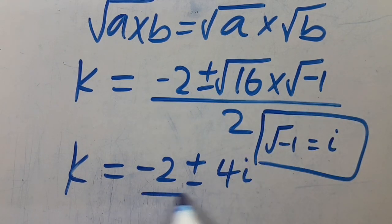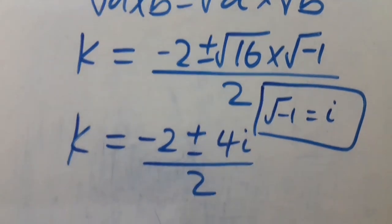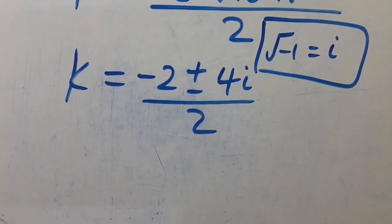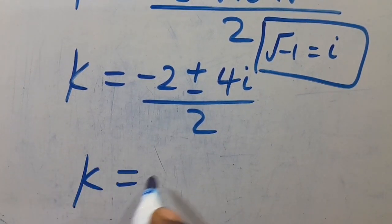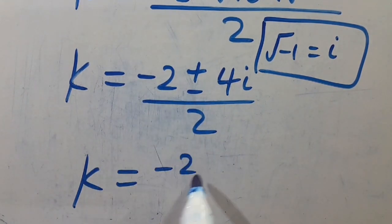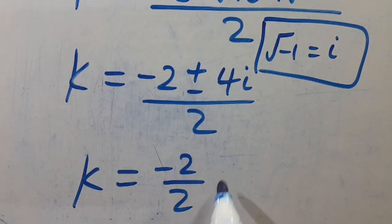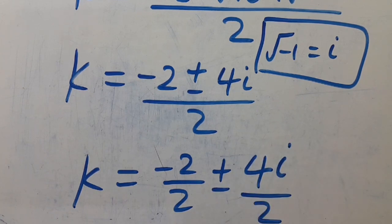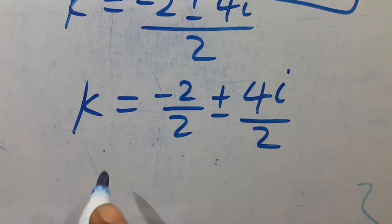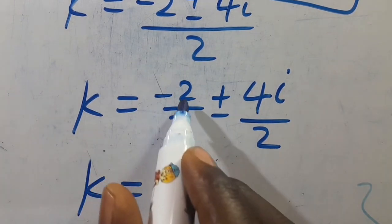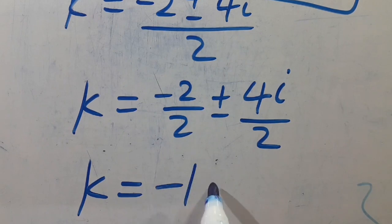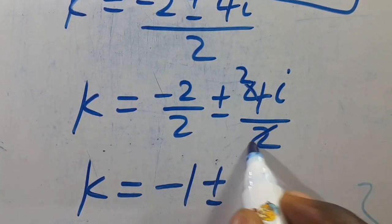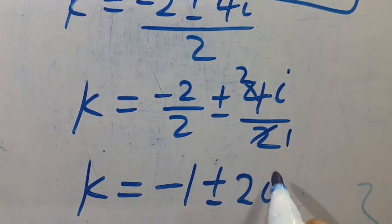So here we have 4i, divided by 2. From here we have k equals minus 2 divided by 2, positive or negative, 4i divided by 2. So k equals minus 1, positive or negative, 2i.